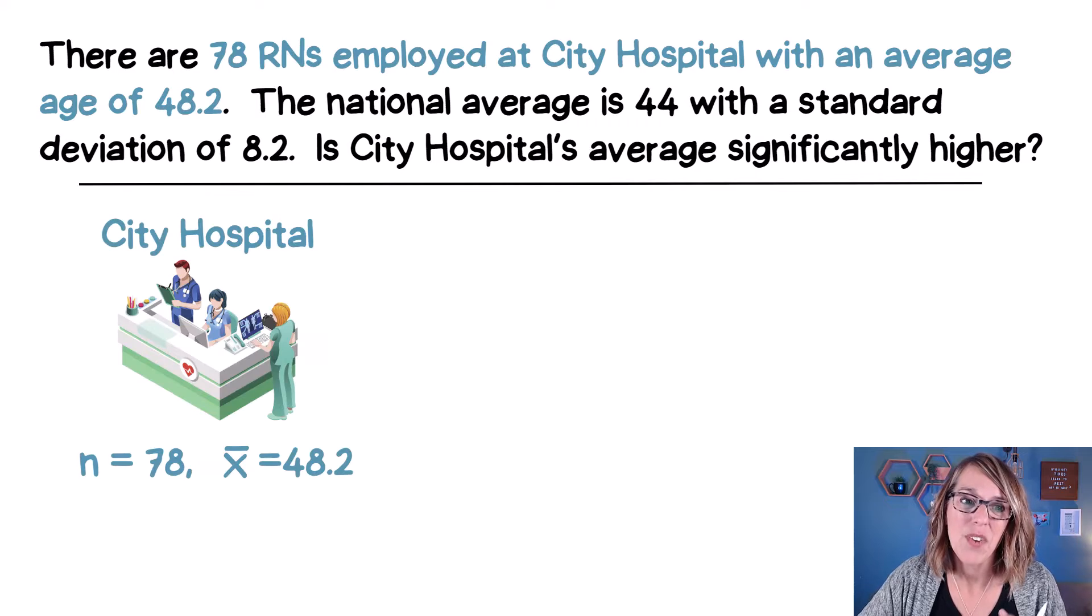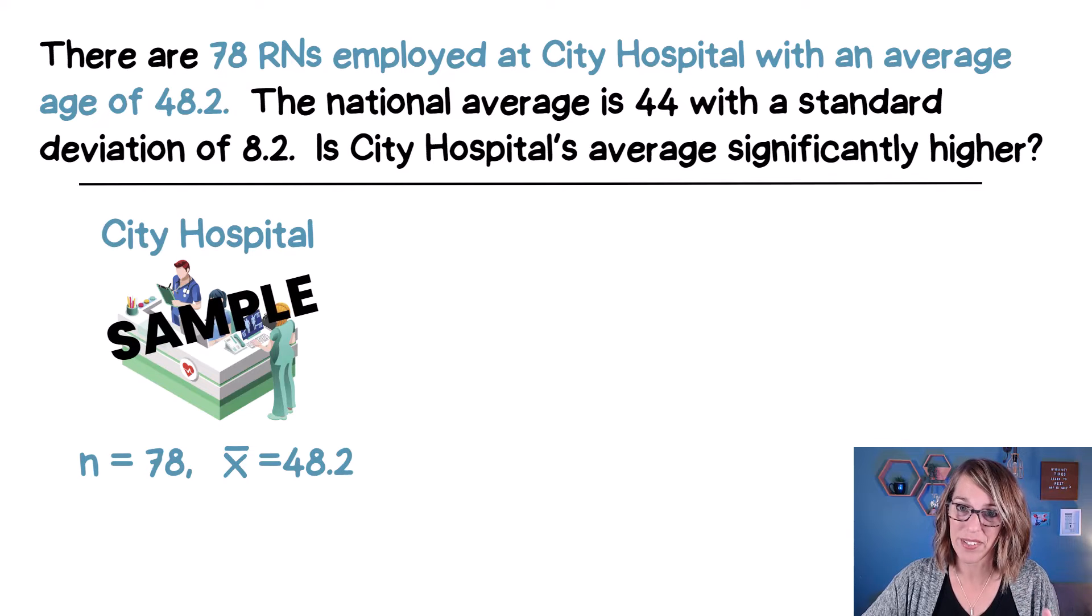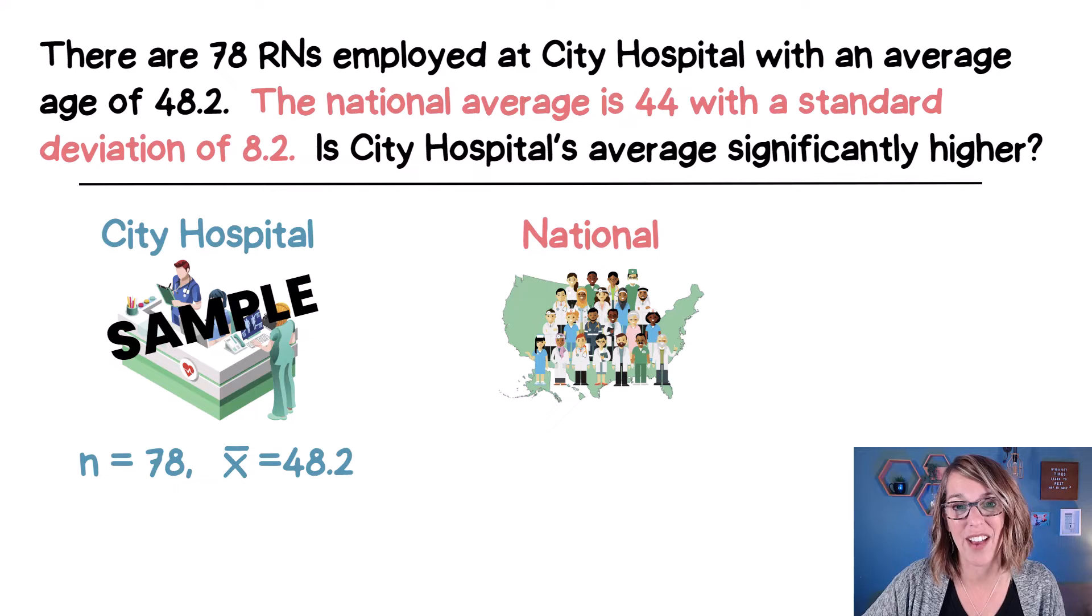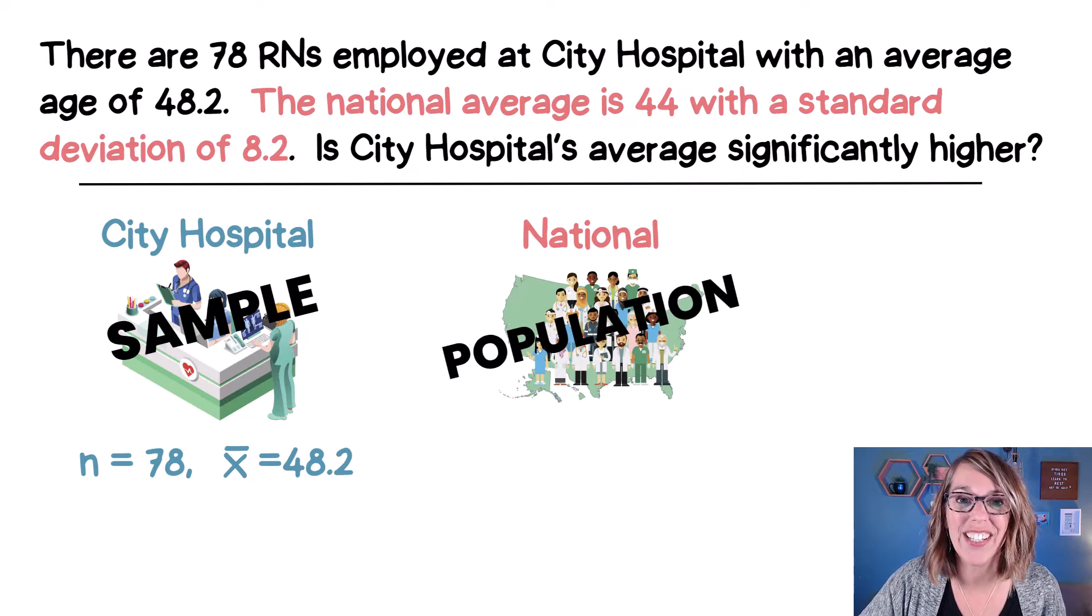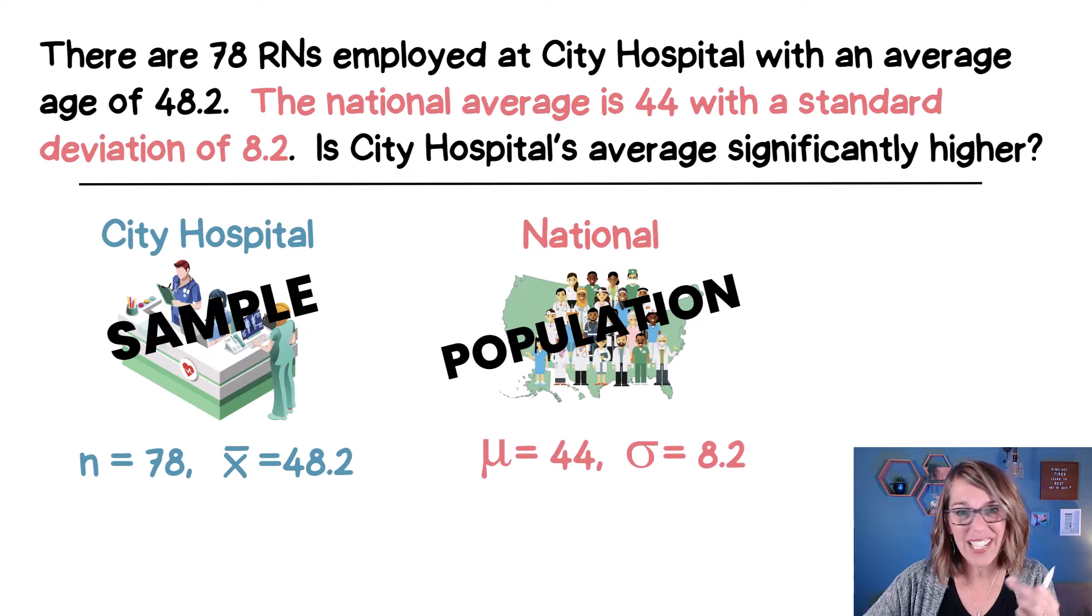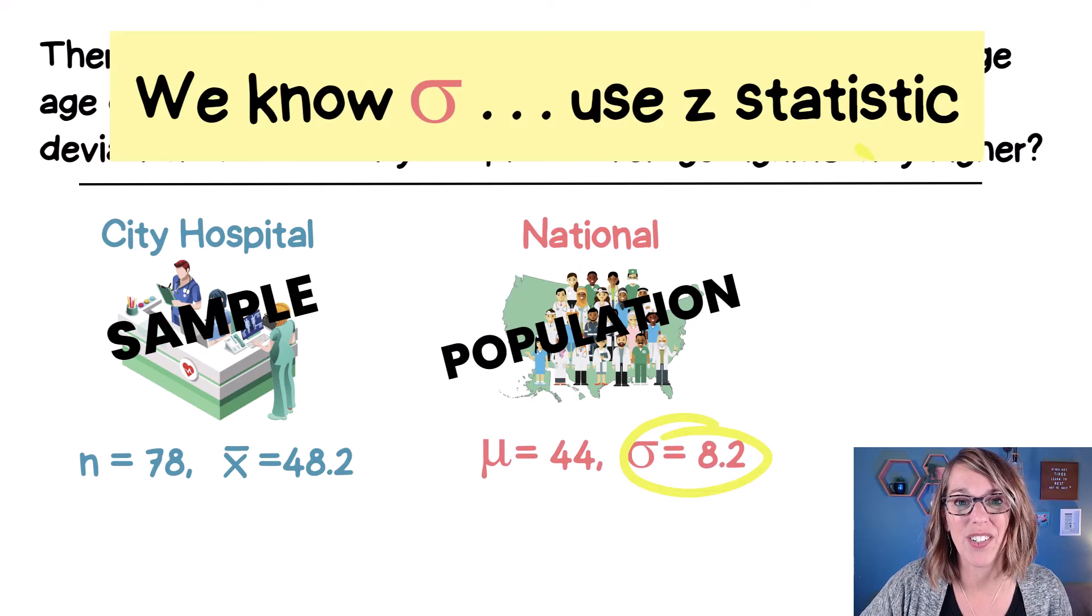So back to our example, we've got 78 nurses at City Hospital. Now City Hospital is going to be our sample because these nurses are also part of that national average. So the national average is our population with a mean and a population standard deviation of 8.2.